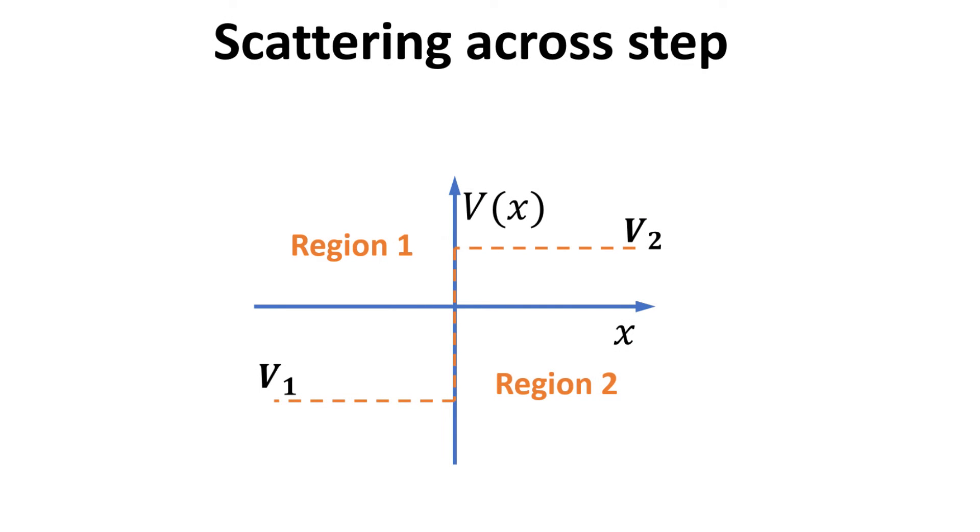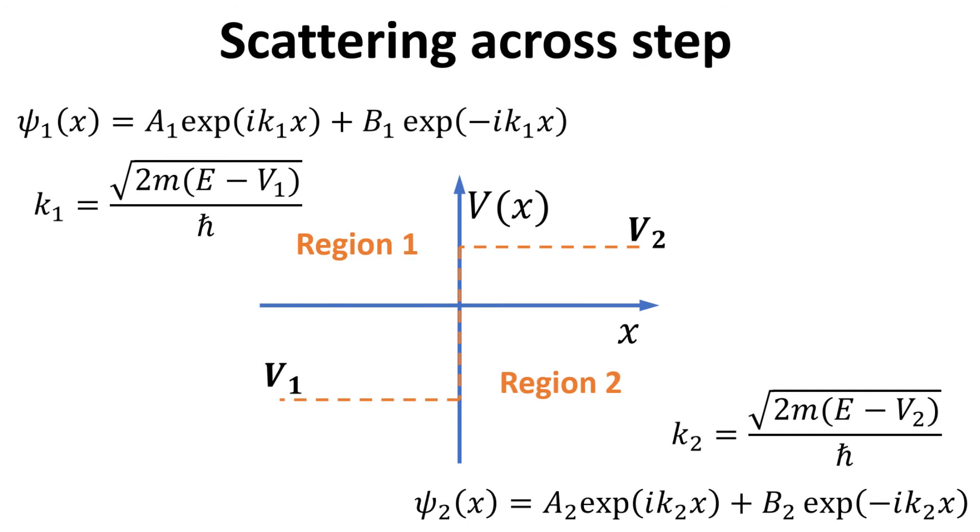Let's consider the problem with just a single potential step as shown. We write the piecewise solutions ψ1 and ψ2 for regions 1 and 2. The solutions in each region are characterized by the wave vector kj, and complex amplitudes aj and bj. These are also called the scattering amplitudes.